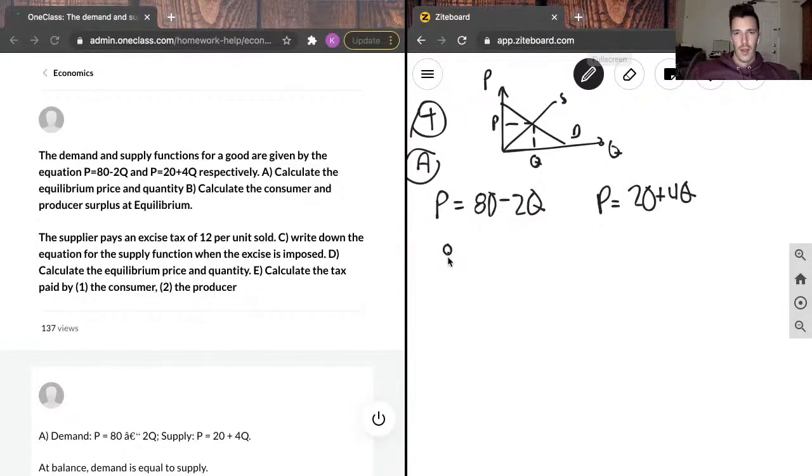With that, we're going to get 80 minus 2Q is going to equal 20 plus 4Q. Now, we will group like terms. So, left side, we will make 80. Subtract 20 from both sides to get 80 minus 20.